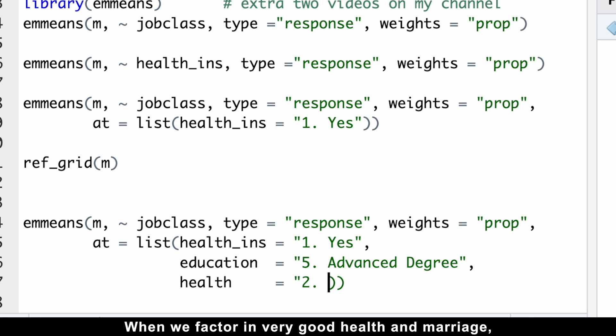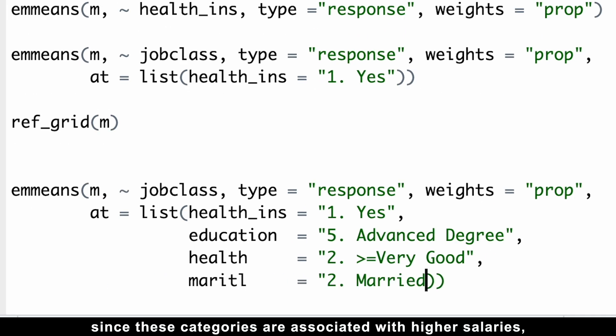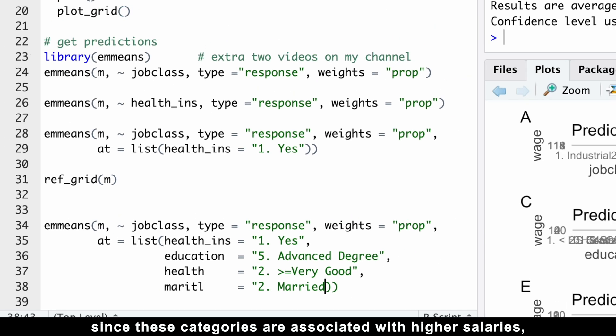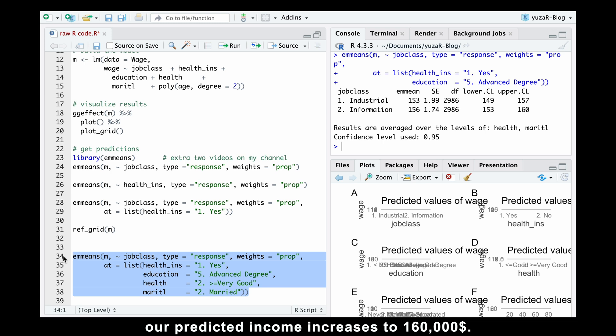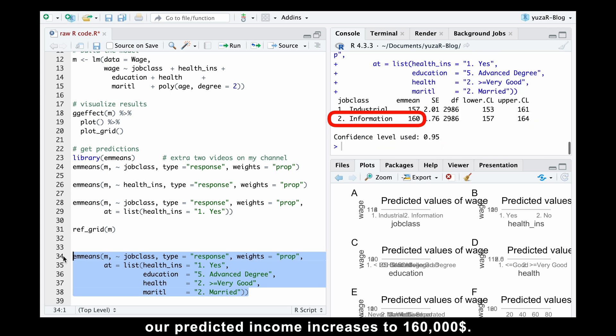When we factor in very good health and marriage, since these categories are associated with higher salaries, our predicted income increases to $160,000.